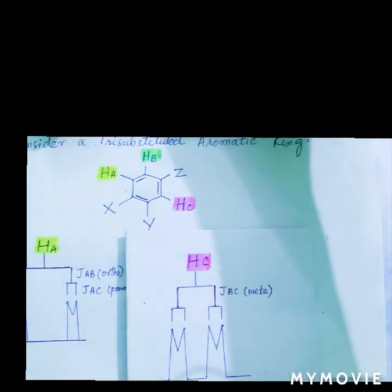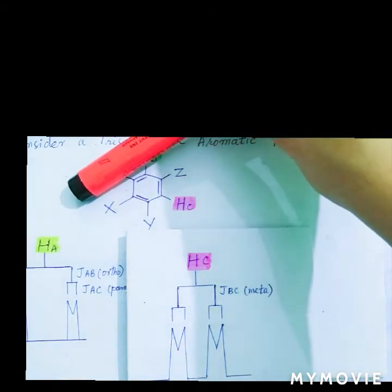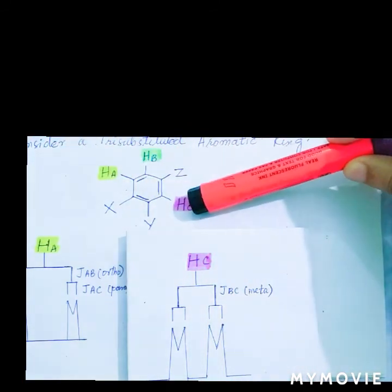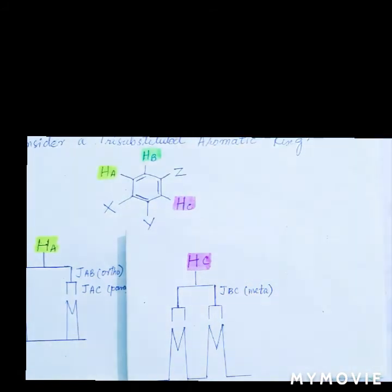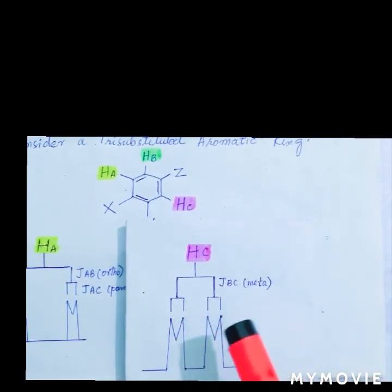So the J values differentiate between all these signals splitting. If we consider HC, it has again two protons, HB and HA. One is meta to it and one is para to it. So the meta and para splitting is again here. And the combined spectra will have a splitting pattern like this.